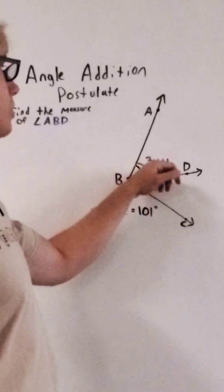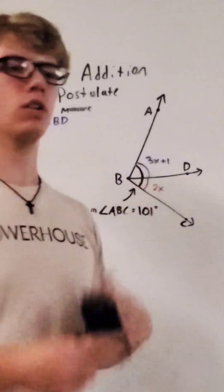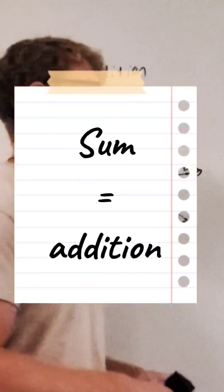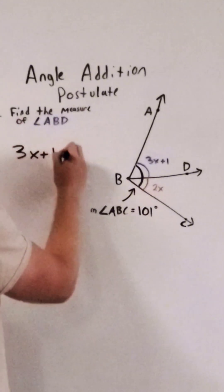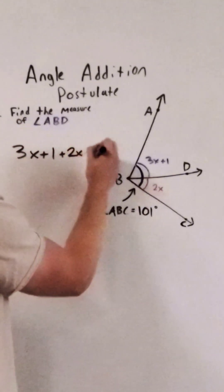Now we know two parts, 3x plus 1 and 2x. Sum means addition, so we're gonna add the parts together and set them equal to the whole. So we have 3x plus 1 plus 2x equals 101.